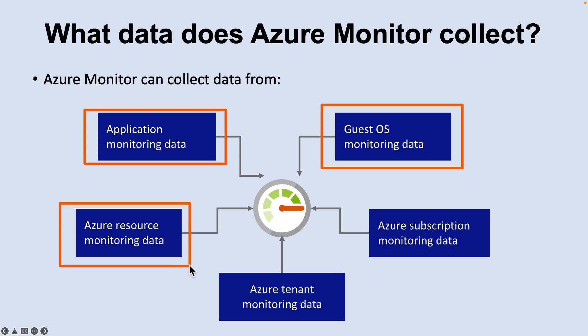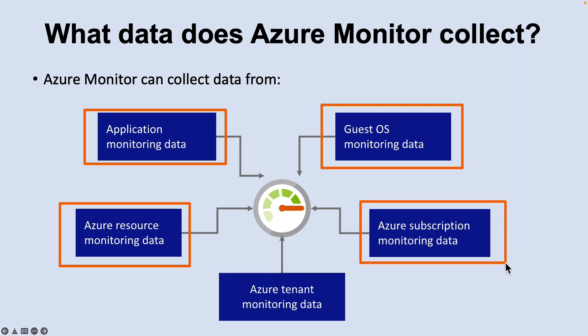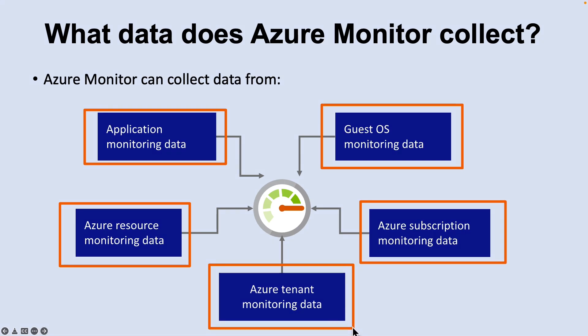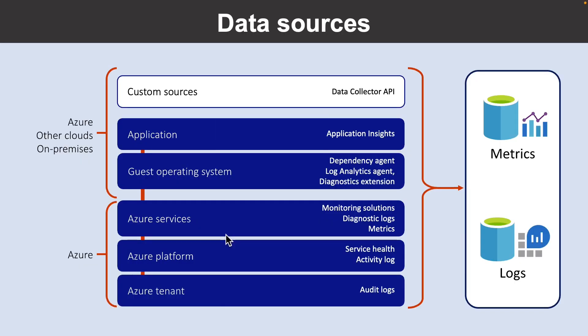Third is Azure Resource Monitoring Data, which includes data about the operation of an Azure resource. The fourth is Azure Subscription Monitoring Data, which includes data about the operation and management of an Azure subscription as well as data about the health and operation of Azure itself. The fifth is Azure Tenant Monitoring Data, which includes data about the operation of tenant-level Azure services such as Azure Active Directory. Monitoring data in Azure comes from a variety of sources that can be organized into tiers, with the highest tiers being your application and operating systems, and the lower tier being components of the Azure platform.